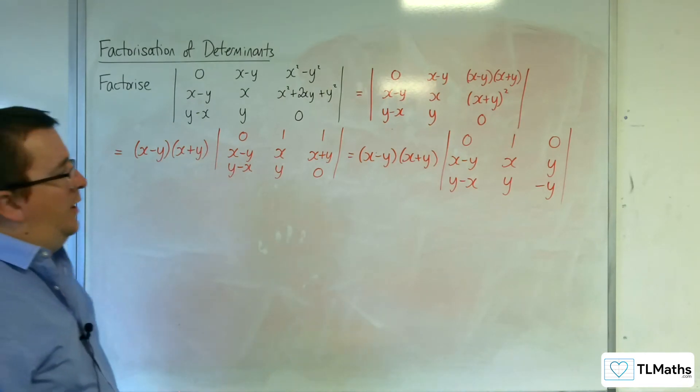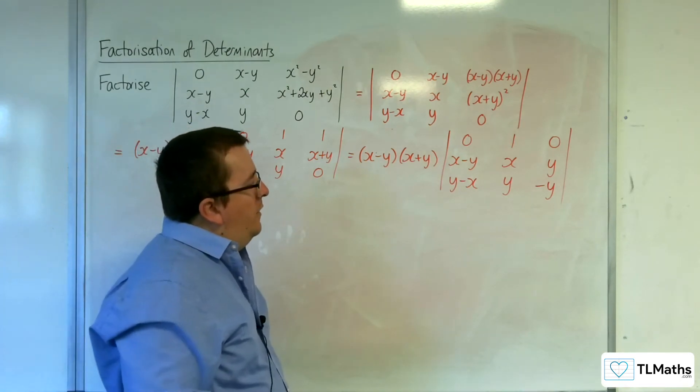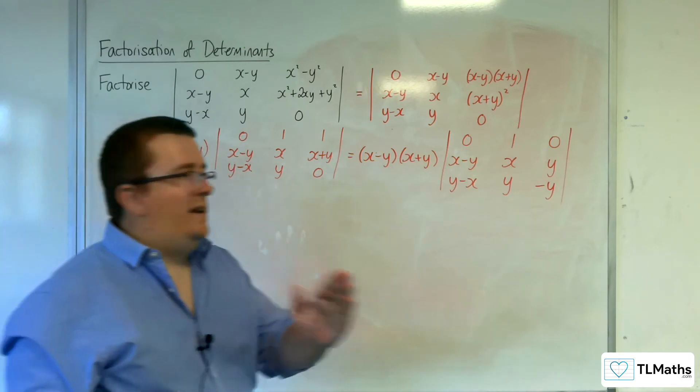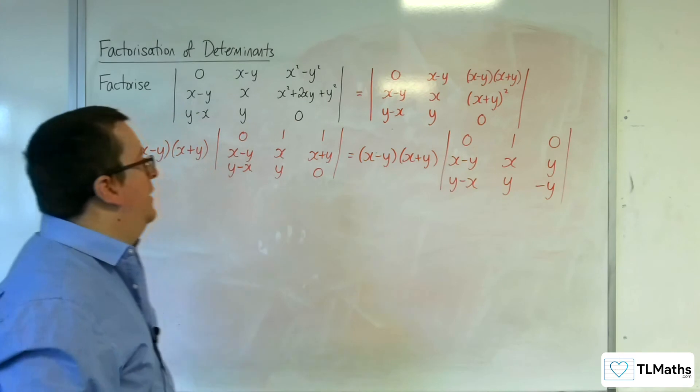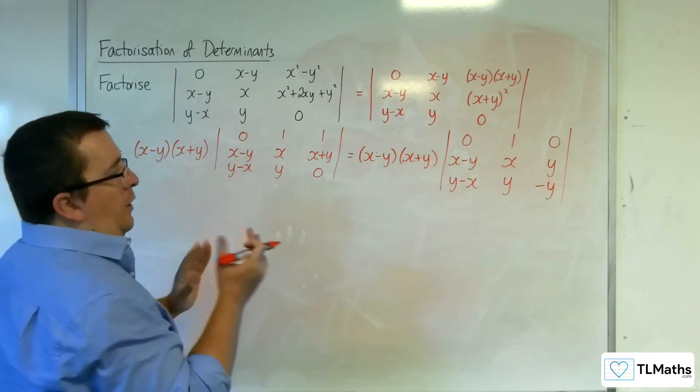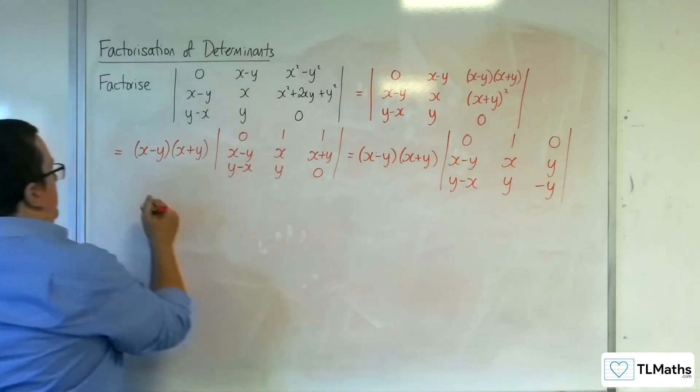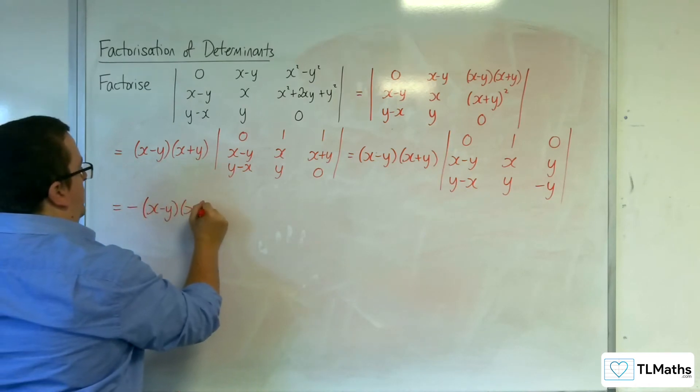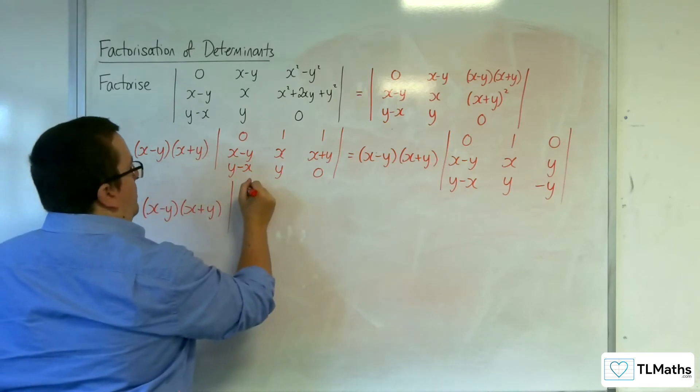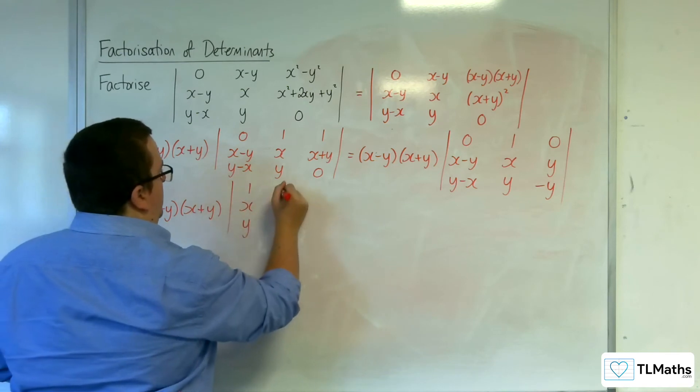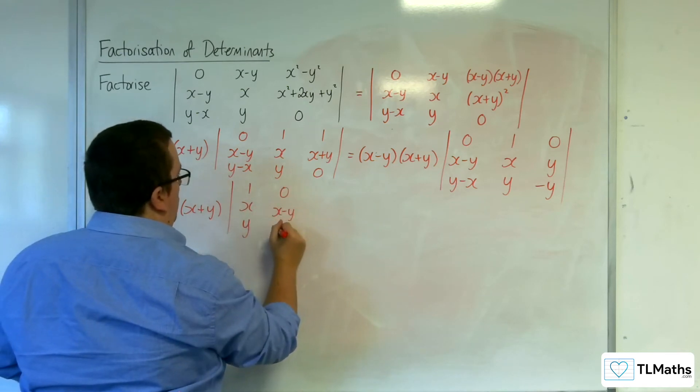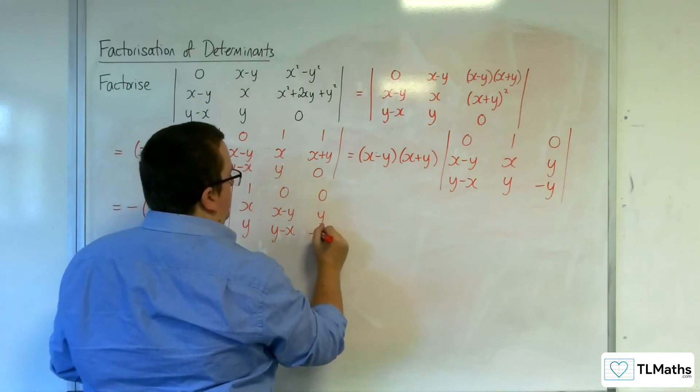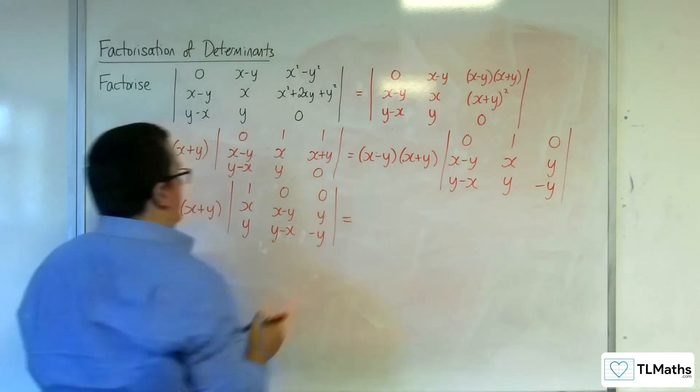So, next thing that I might do is, because I preferably like the 1 to be the top left, I'm just going to swap those two columns. So that's going to put a minus sign outside the front. So I'm going to have: 1, x, y; 0, x take away y, y take away x; and then 0, y, minus y.